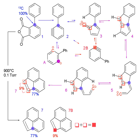An isotopic tracer, also called isotopic marker or isotopic label, is used in chemistry and biochemistry to help understand chemical reactions and interactions.